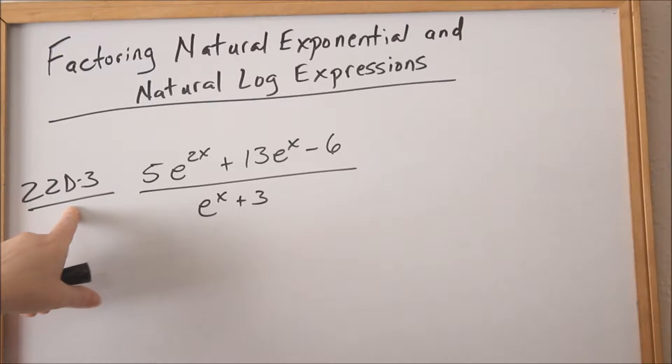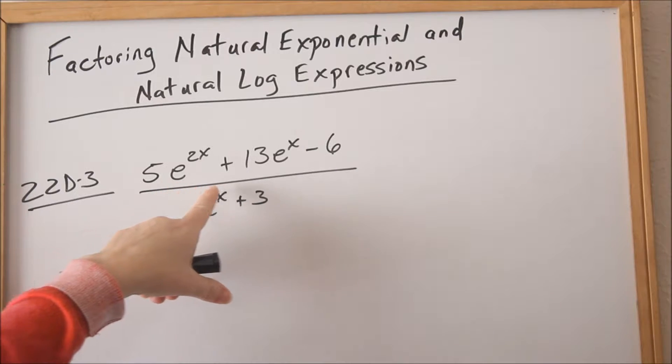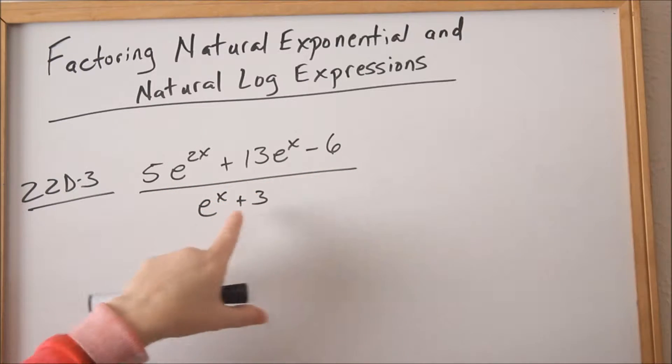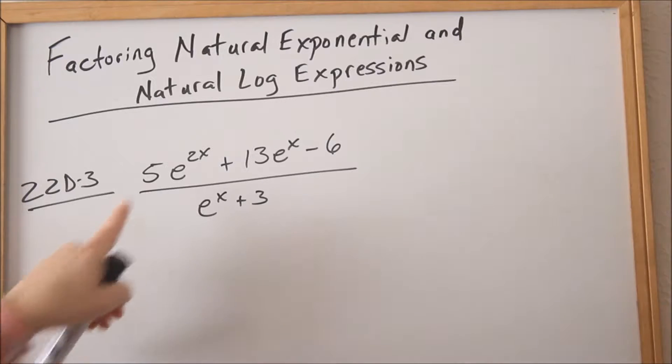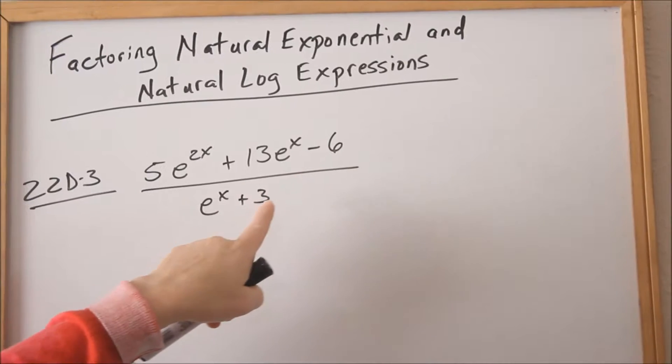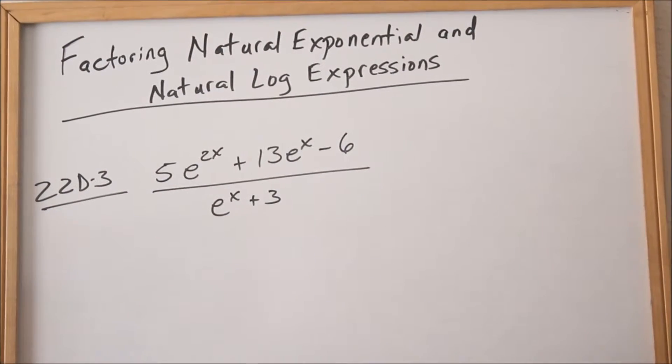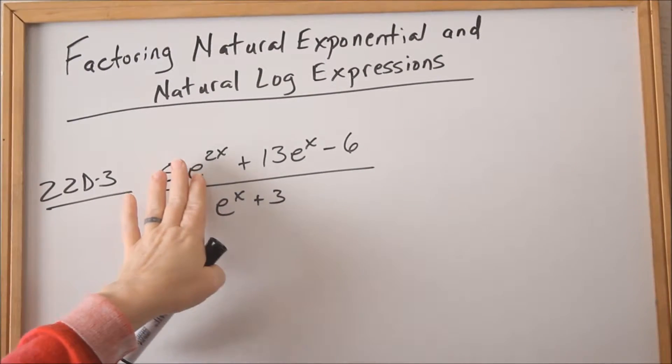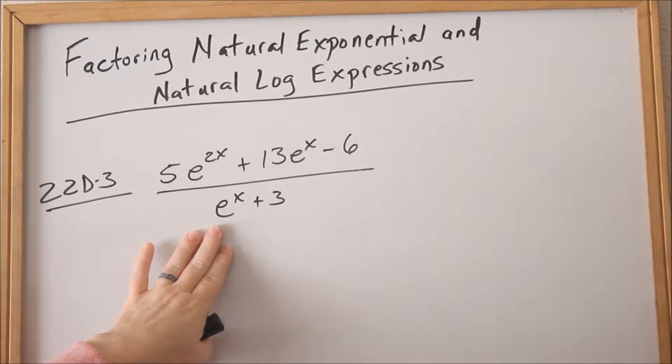Look at 22d3: (5e^(2x) + 13e^x - 6) / (e^x + 3). We're going to factor like you factor a trinomial into two binomials, but there's a way to make this easier on our eyeballs than to have all the e^x's in there.